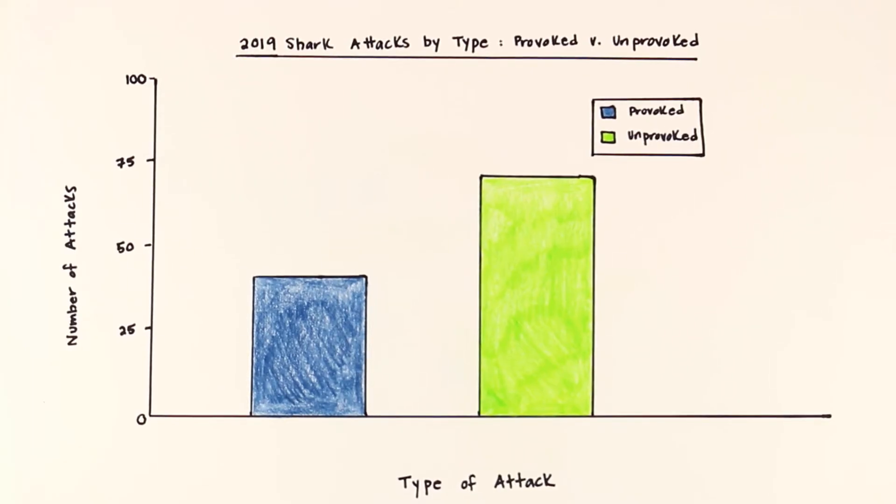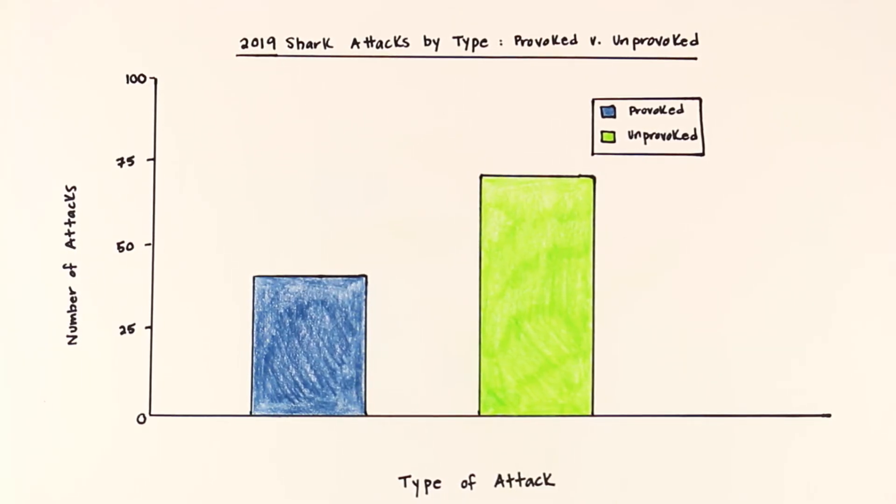The second type of graph we will discuss today is the bar graph. Bar graphs are similar to line graphs. They often show changes over time or compare multiple things also.